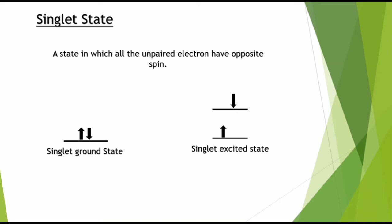Before we study the mechanism of fluorescence and phosphorescence, let's see what is the singlet state. A state in which all the unpaired electrons have opposite spin. Both the unpaired electrons in the ground state have opposite spin, thus it is known as the singlet ground state.